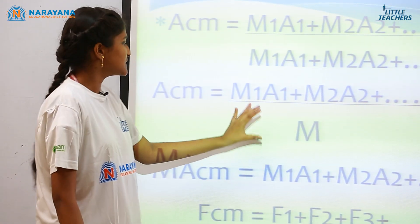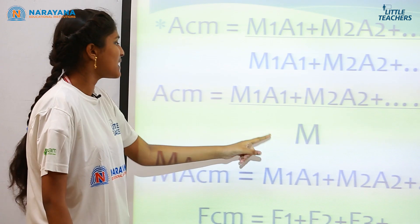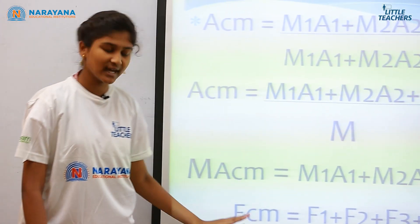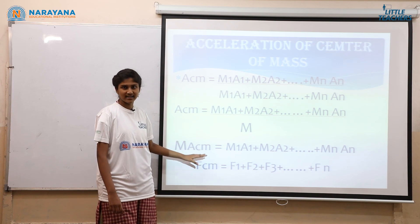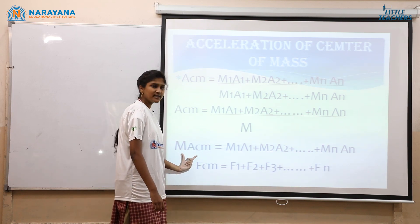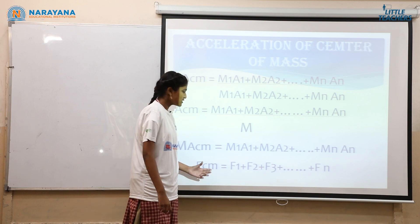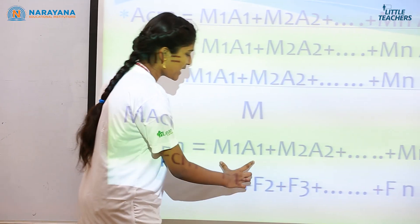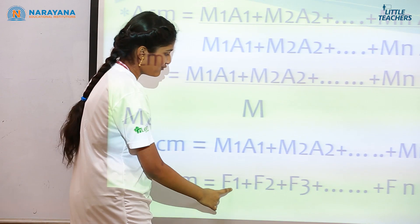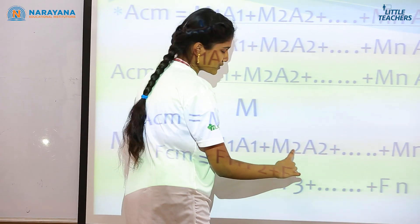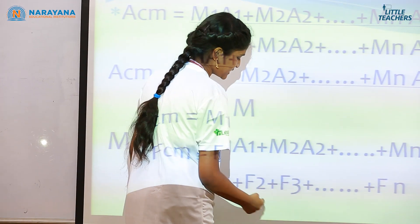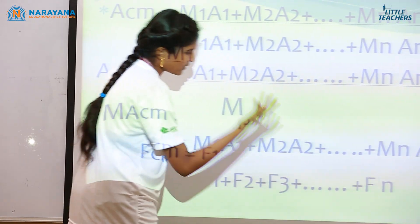In the same way, mass multiplied by acceleration forms a force, since force equals mass into acceleration. So m1·a1 is denoted as F1, the mass of the second object and acceleration of the second object as F2, and so on Fn.